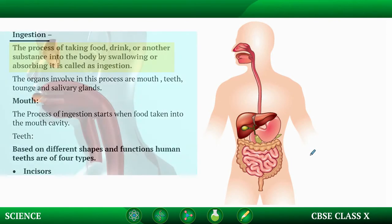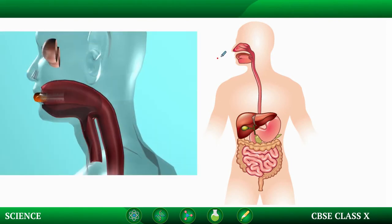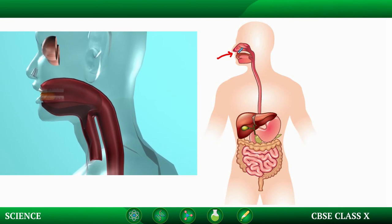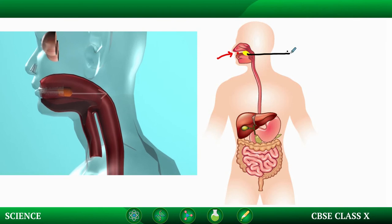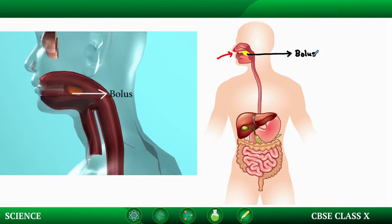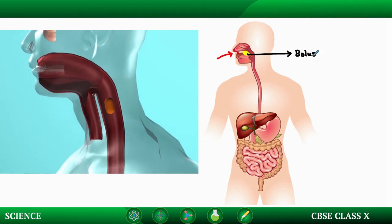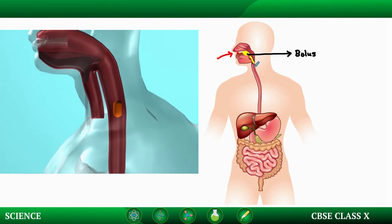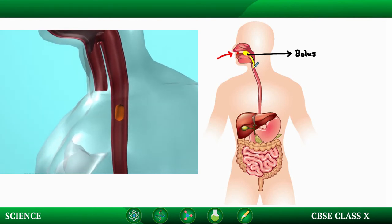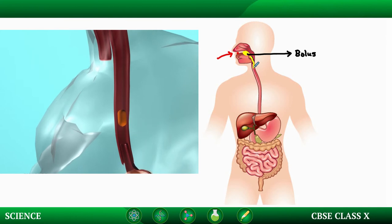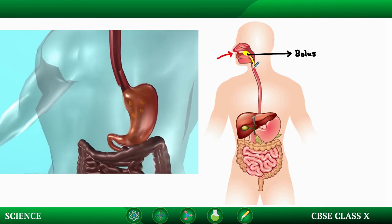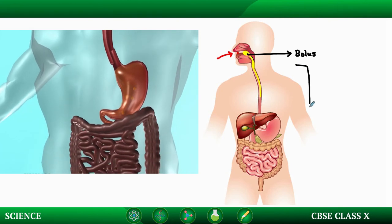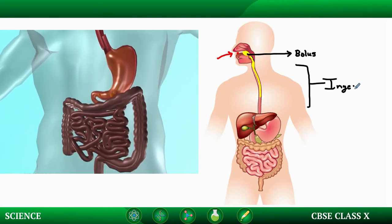When food enters into the mouth and is chewed by the teeth, the tongue gives it the shape of a spherical mass called a bolus. The tongue then pushes this mass into the pharynx, where it is swallowed by the esophagus. This process of pushing food is known as ingestion.